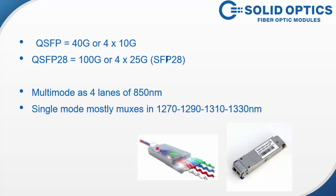For 4 times 25 gig you need an SFP28, which is the SFP with 25 gig. Most of the time they are 4 lanes of 815 nanometers. If you have a single mode, it's typically a muxed version. Inside the LR version there is a laser which muxes 4 lanes of single mode fiber at 1270, 1290, 1310, and 1330 together so it can work on an LC patch, and it demultiplexes it as well to 4 lanes.